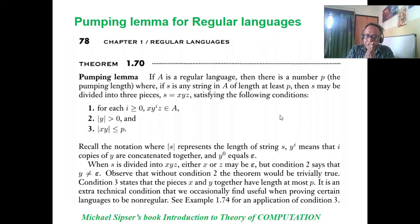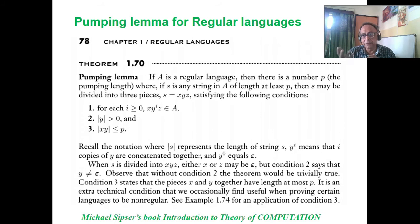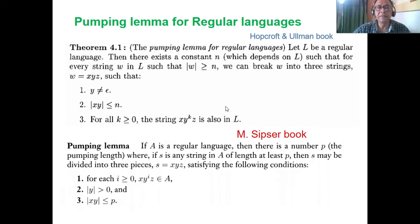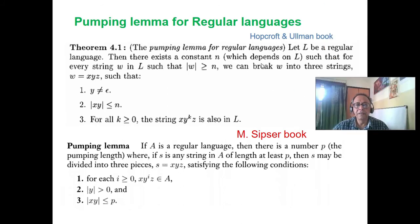Another book is Linz and Debatu — those three are the best books in the international market. This is the comparison between Hopcroft-Ullman's book and Sipser's book for Pumping Lemma. It is called Pumping Lemma in both. The only difference is N versus P. The wordings are different but more or less the same.